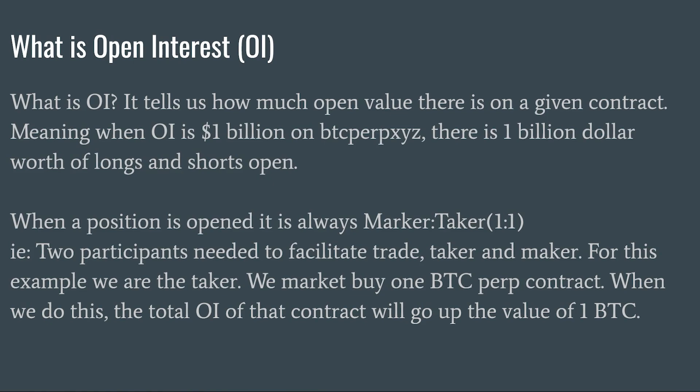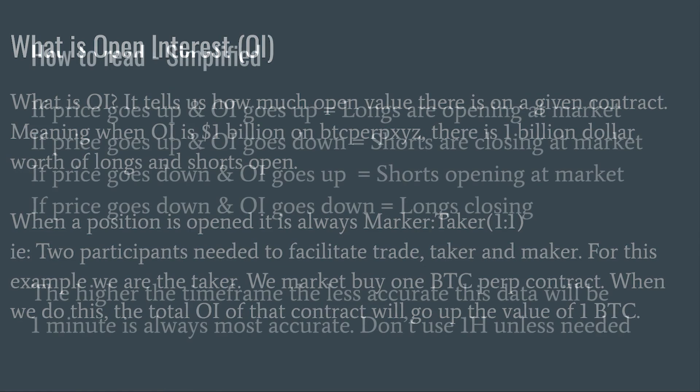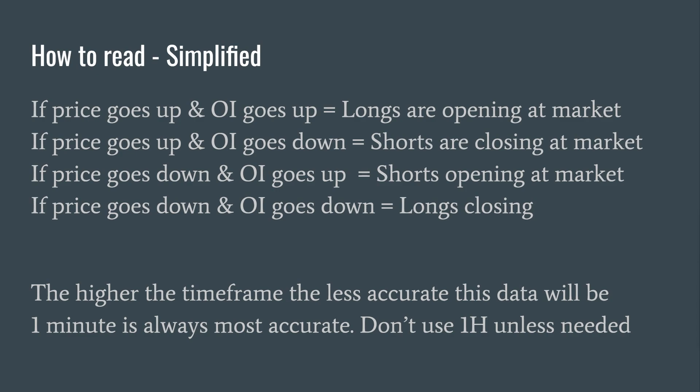When a position is opened it is always one-to-one maker and taker. We have two participants needed to facilitate a trade: the taker and the maker. For this example we're going to be the taker, so we market buy one BTC on the major perp contract. When we do this, the total open interest on that contract will appreciate by one bitcoin.